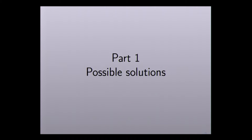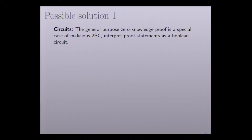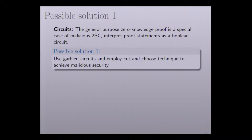We notice that there already exist some efficient solutions for some special cases of Zero-Knowledge Proof. But in our work, we focus on the general purpose Zero-Knowledge Proof. The first possible solution is by using circuits. Since the general purpose Zero-Knowledge Proof is just a special case of malicious 2PC, we can interpret the proof statement as a Boolean circuit and then use garbled circuits to implement the Zero-Knowledge Proof.